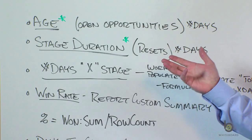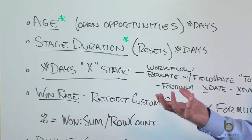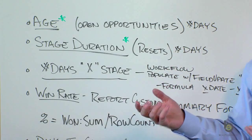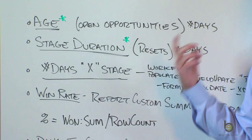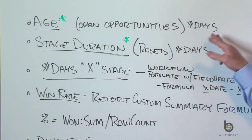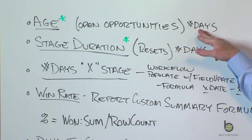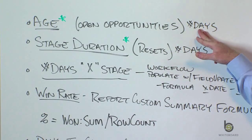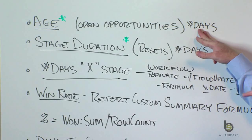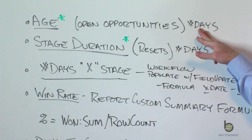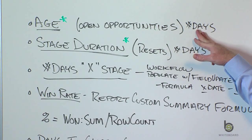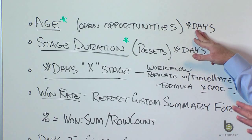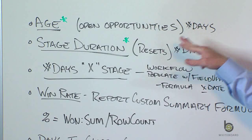Age is simply — if you have an open opportunity, Salesforce is going to look at when an opportunity was created and today's date, and it will express a number field: the number of days that an opportunity has been open. If you flip an opportunity to closed — whether closed lost or closed won — you're going to get a zero on that.